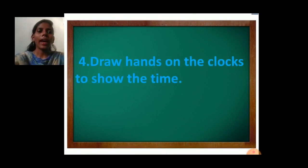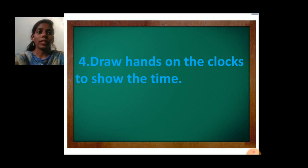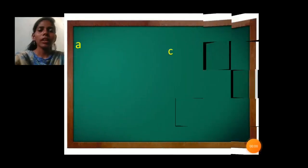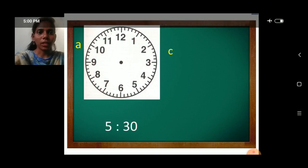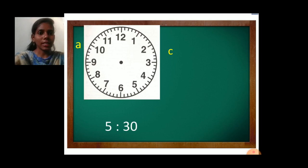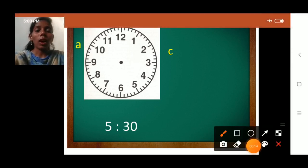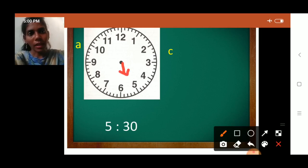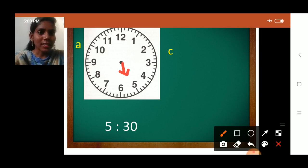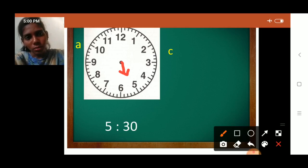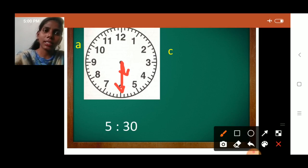Next, question number 4: Draw hands on the clocks to show the time. Here the time is given and you have to draw the hands on the clocks to show the correct time. See first — here, 5:30. You have to show 5:30, which is 5 hours 30 minutes. The hour hand is the smaller hand, so draw the small hand crossing number 5. And the minute hand is at number 6 because it is 30 minutes. So this is 5 hours 30 minutes.